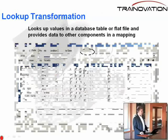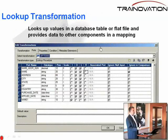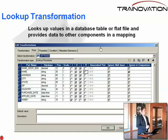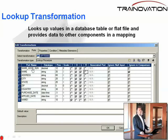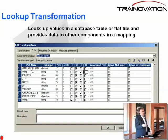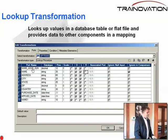The lookup transformation looks a little bit like this. We've got the lookup values in the database table or the flat file, which provides data to other components in the mapping. This is the lookup — it's an outer join. We have a number of different settings: a port name, which is a field name or column name — those are all synonymous terms.